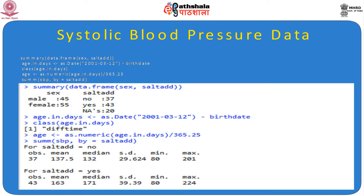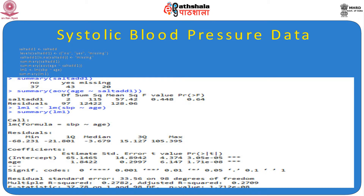Now we try to find out the relation between age and salt intake using ANOVA (AOV function). We found that the mean age was not significantly different among those who had salt intake versus not. All age groups have approximately equal salt intake, with a P-value of 0.64, confirming no significant difference in age across salt intake groups.